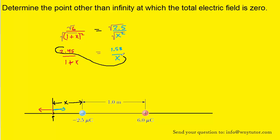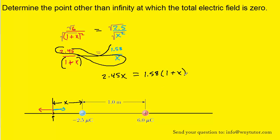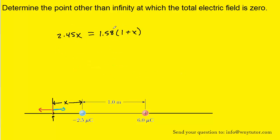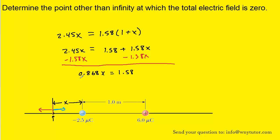Next, we cross multiply: 2.45 times x gives 2.45x, and 1.58 times (1 + x). Distributing 1.58 into the parentheses, we then subtract 1.58x from both sides, and finally divide both sides by 0.868 to solve for x. We find that x is approximately 1.8 meters.